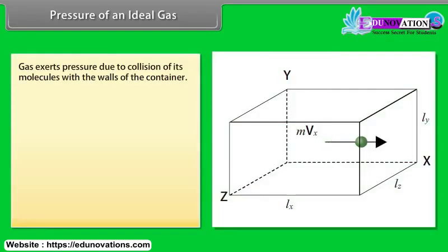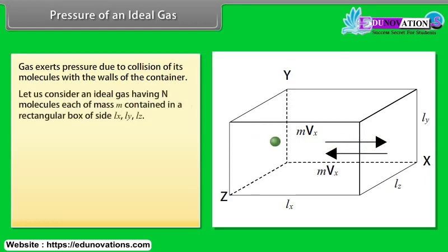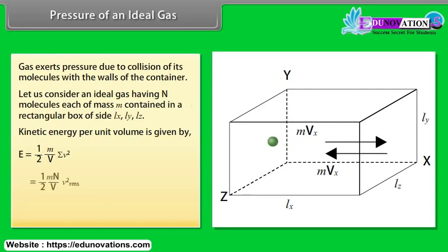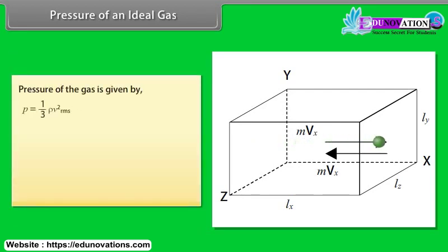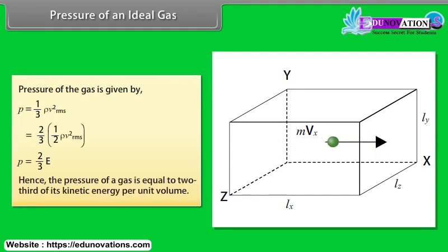Pressure of an ideal gas: Gas exerts pressure due to collision of its molecules with the walls of the container. Let us consider an ideal gas having N molecules each of mass M contained in a rectangular box of site LX, LY, LZ. Kinetic energy per unit volume is given by E is equal to half rho VRMS square. Pressure of the gas is given by E is equal to 2 by 3 of E. Hence, the pressure of a gas is equal to 2 third of its kinetic energy per unit volume.